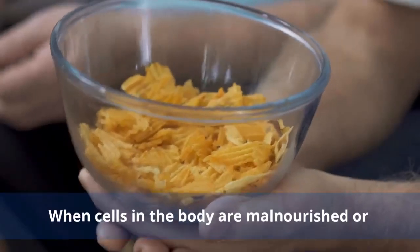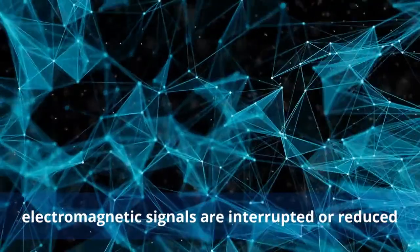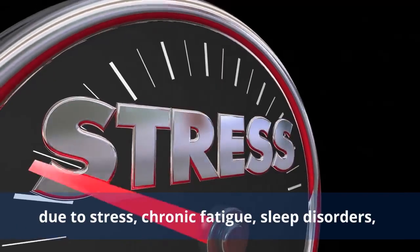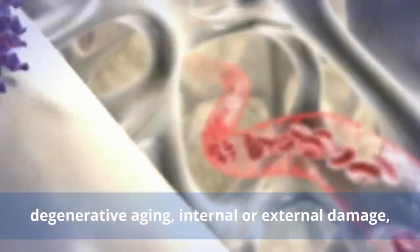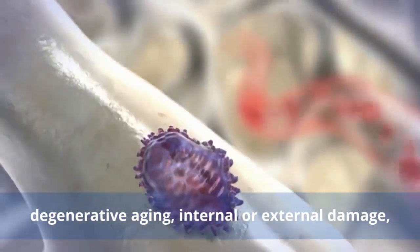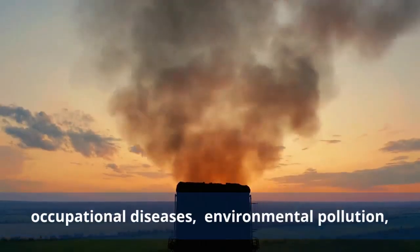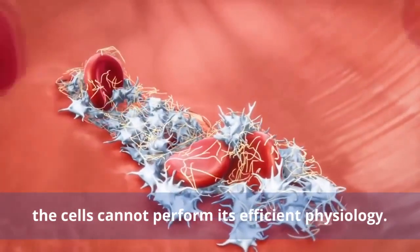When cells in the body are malnourished or the proper electromagnetic signals are interrupted or reduced due to stress, chronic fatigue, sleep disorders, degenerative aging, internal or external damage, occupational diseases, or environmental pollution, the cells cannot perform efficient physiology.